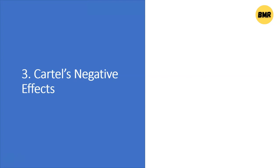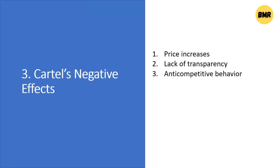What are the negative effects of cartels? First, price increase: when a cartel is formed, all members raise their prices at the same time, reducing demand elasticity for a single producer. Second, lack of transparency: there is a lack of transparency because members do not disclose prices unless they have agreed to do so. Nobody will show you a price until there is an agreement and they are willing to share their product price.